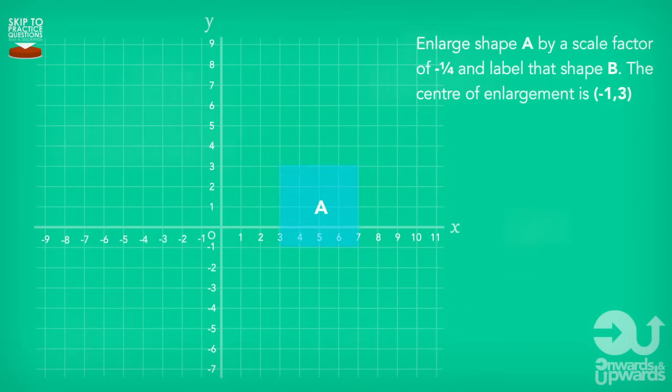What if we had a question like this? Enlarge shape A by a scale factor of minus one over four and label that shape B. The centre of enlargement is minus one, three. So that's two things here. We've got a minus value and we've got a number that is less than a whole. We've got a fraction that is a quarter. We know from what we've just gone through that the new shape will be four times smaller because it's a quarter of the size and also on the other side of our centre of enlargement point.